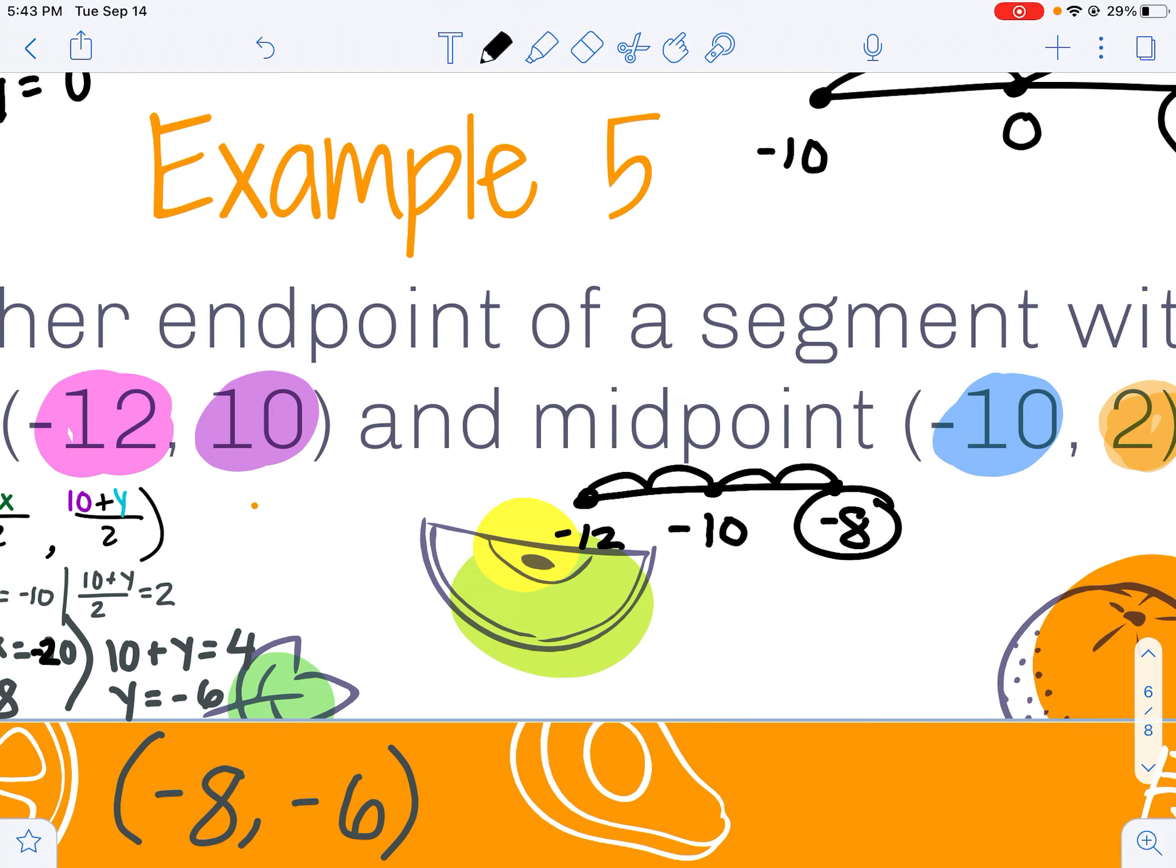Same thing with my y. I started at 10. My midpoint landed me at 8, which means I went down 2.